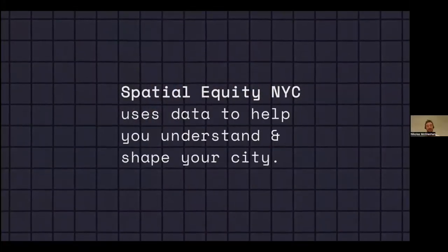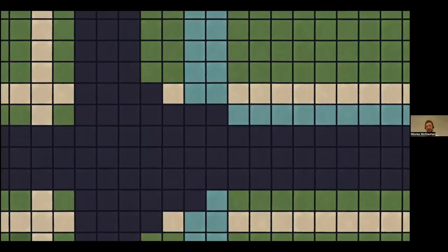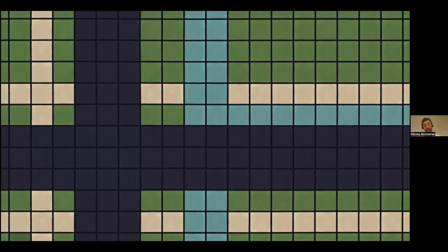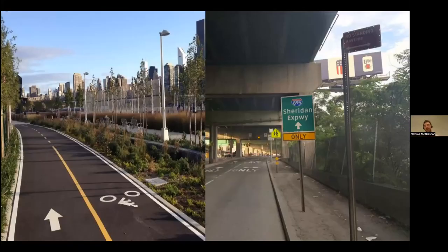I'm Jerry Boucheseta. I was on the team as UX/UI designer, and I also helped with front-end development. Spatial Equity NYC uses data to help you understand and shape your city. In this project, we're really asking: how is public space shaped in New York City, and how does the quality of public space vary across the entire city?